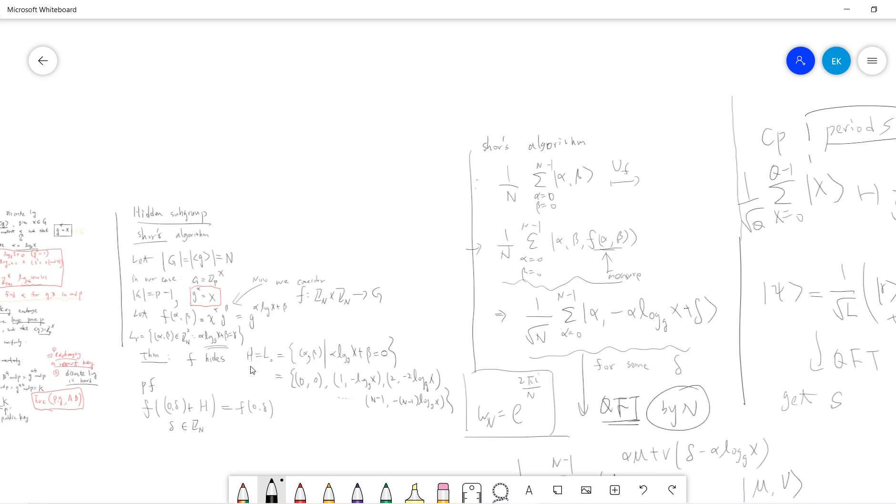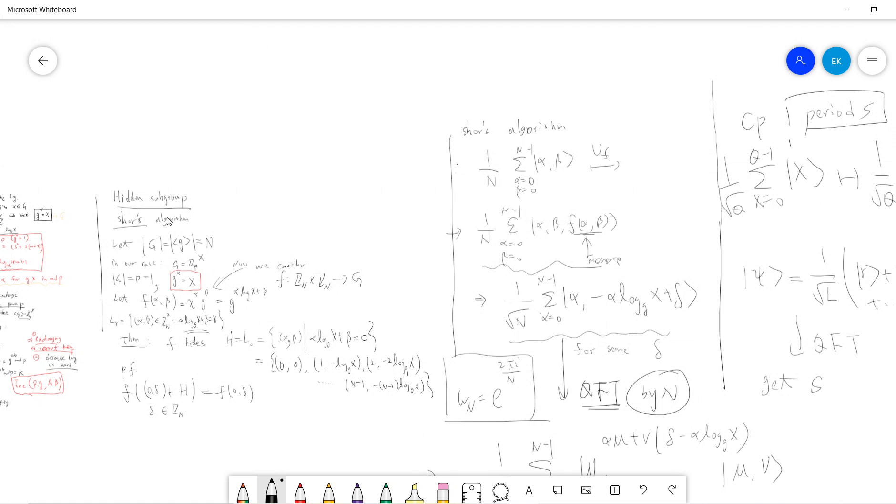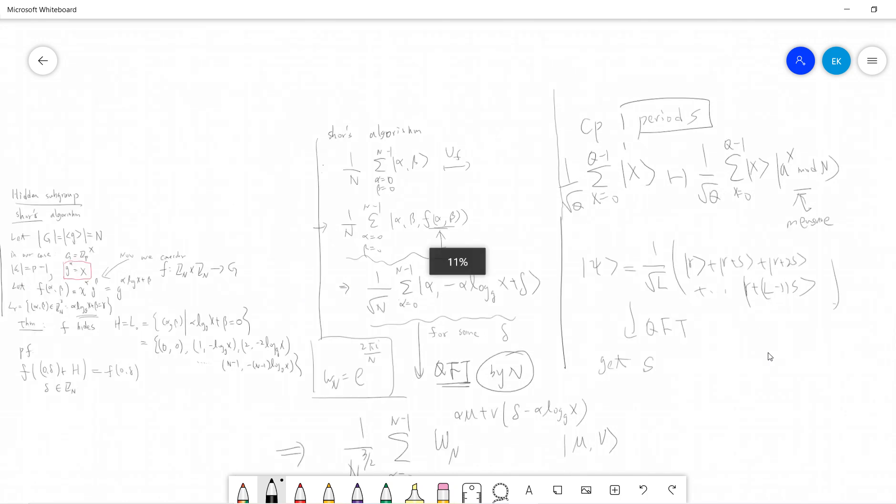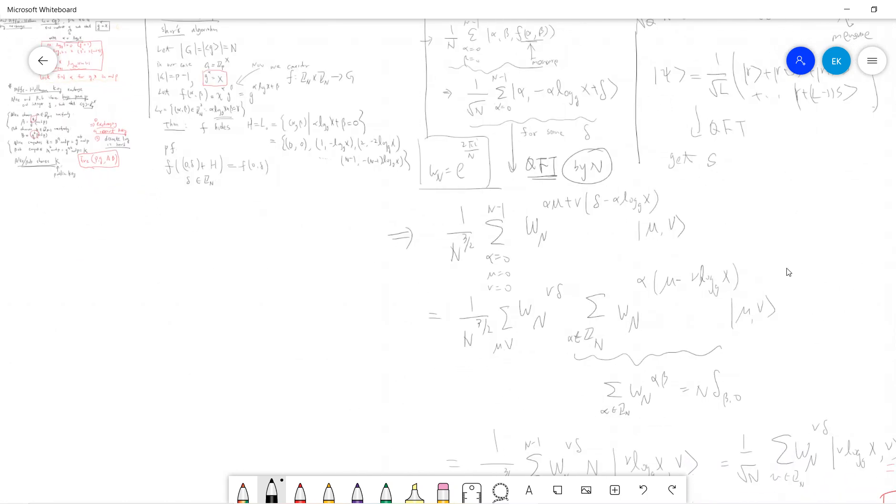It's like a linear combination, just some linear combination in integer linear combination of alpha and beta. So it's very obvious that this discrete log is somehow the simplest generalization of the Shor's algorithm.